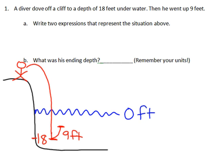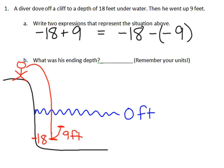We need to come up with two different expressions that represent what happened. So the first number we had was negative 18, and then we added 9 positives — that's one representation. For the second representation, we use what we know about the relationship between addition and subtraction. A second possible expression still starts with negative 18, but since adding a positive is the same as subtracting a negative, negative 18 minus negative 9 means the same thing as negative 18 plus 9.